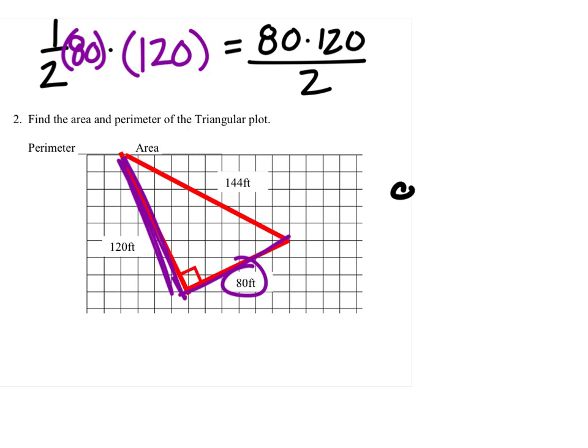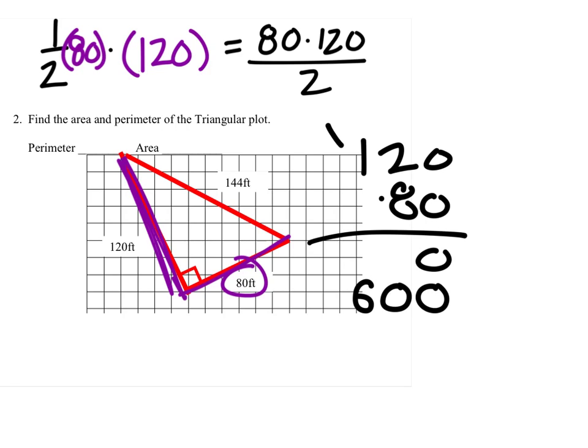Alright, so let's do 80 times 120. We'll just have zero in the ones. So let's look at the tens. 8 times 0 is 0. 8 times 2 is 16. Carry the 1. 8 times 1 is 8. Plus 1 is 9.